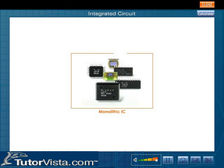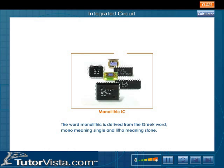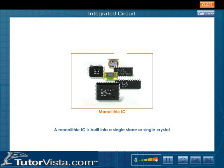The monolithic IC is a micro circuit consisting of elements formed on the surface of a common substrate. The word monolithic is derived from the Greek words mono, meaning single, and litho, meaning stone.